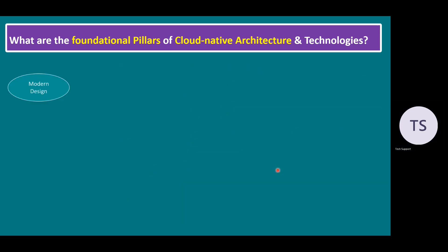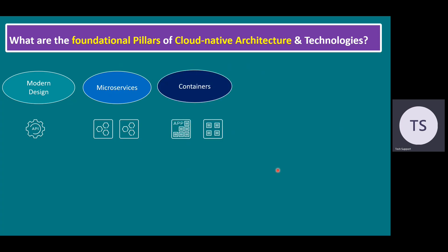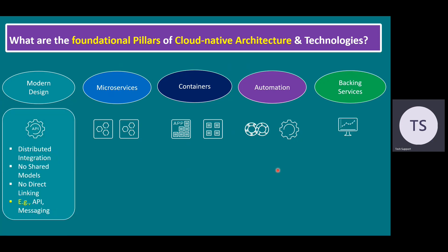Within modern design, we have access methodologies via application program interfaces and microservices. We have microservices architecture and applications running on portable packages like containers, and automation with DevOps methodology, continuous integration, and continuous deployment and delivery automation tools. We also have backing services. When it comes to modern design specifically: distributed integration, no shared models, and no direct linking — we are using APIs and messaging. That is the best example for modern design.